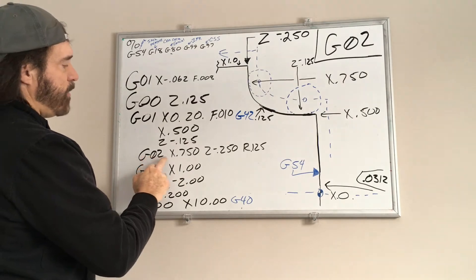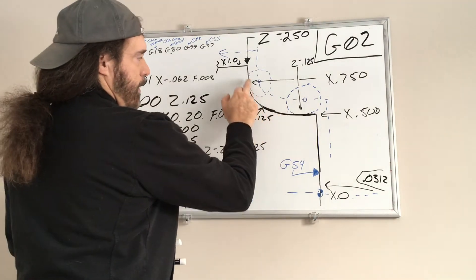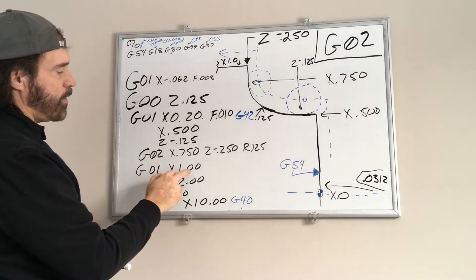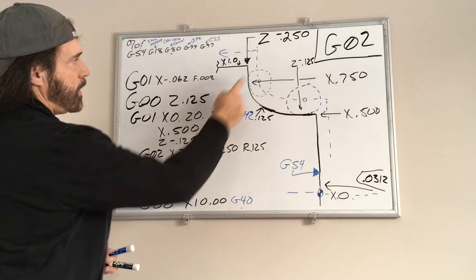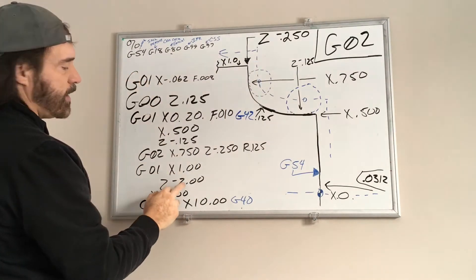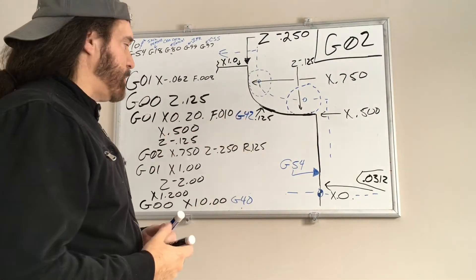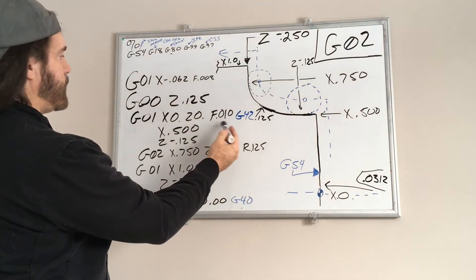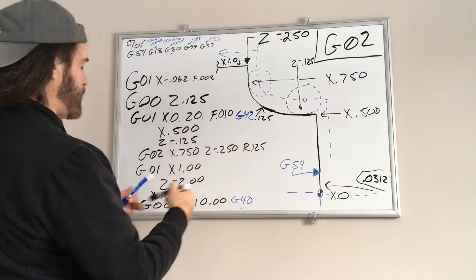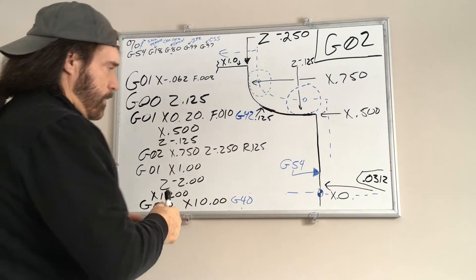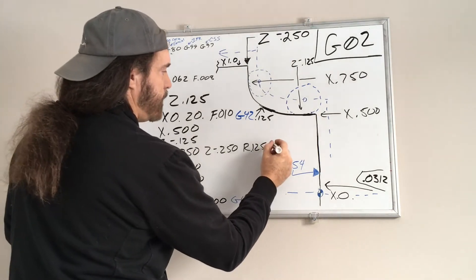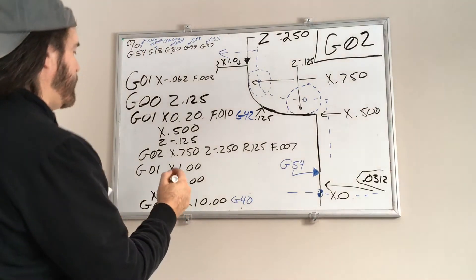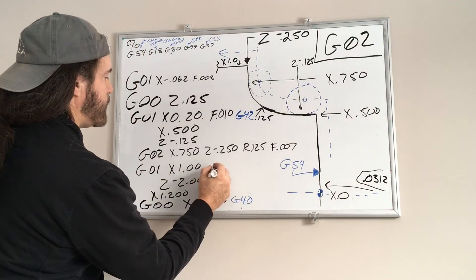So I'm going to feed up to X one point zero, and then I'm going to have it go this way to Z negative two—I'm just doing it for the demonstration. As far as the feeds, I'll leave this at ten thousandths. Maybe I'll slow this down a little bit. We'll say feed rate of seven thousandths per revolution, and then we'll feed this back up to ten thousandths here.